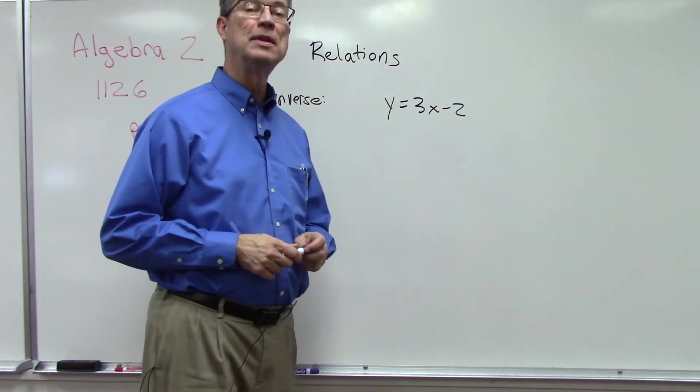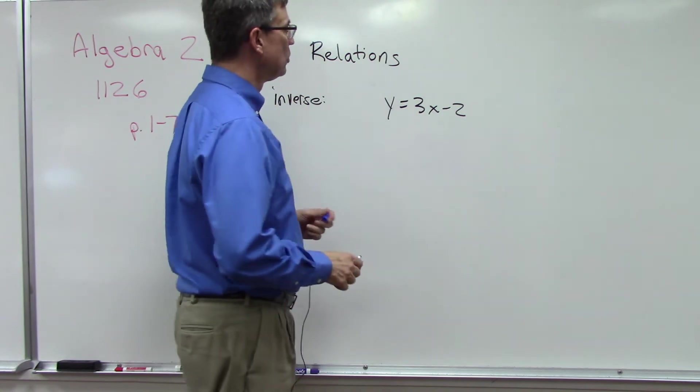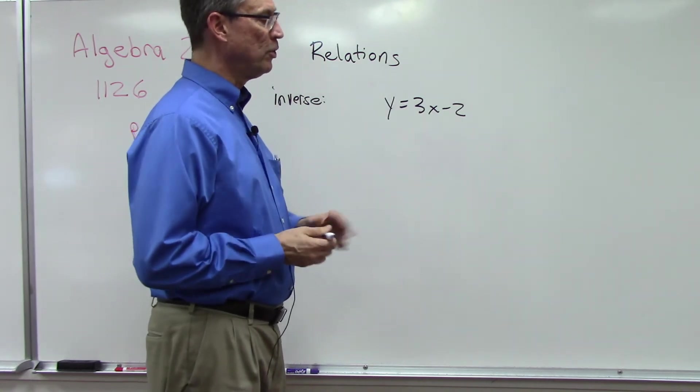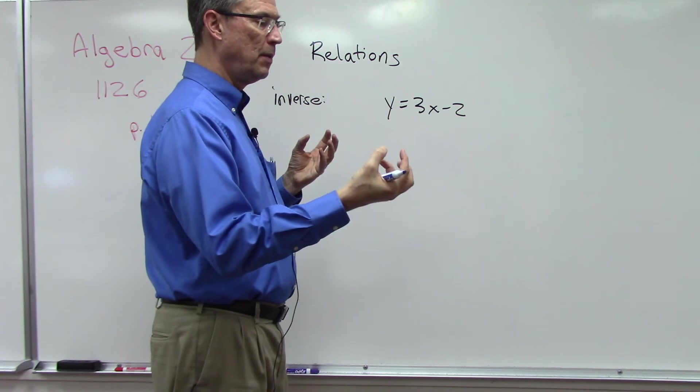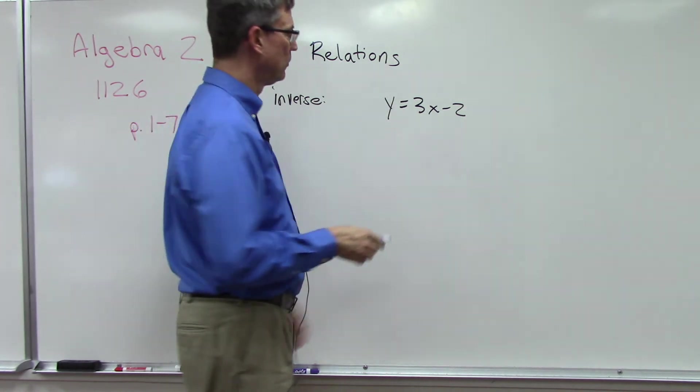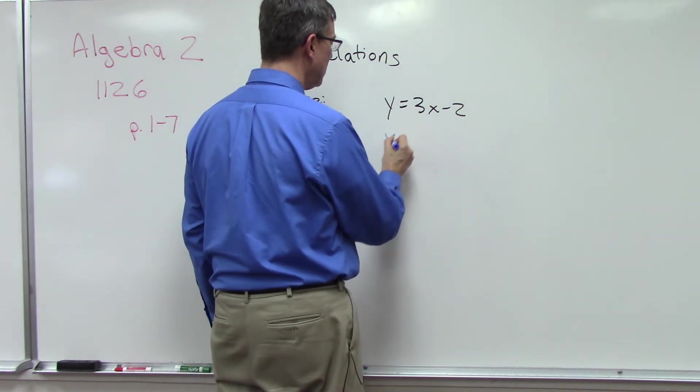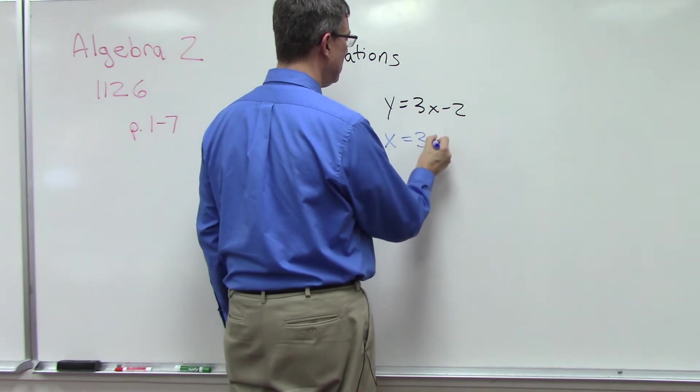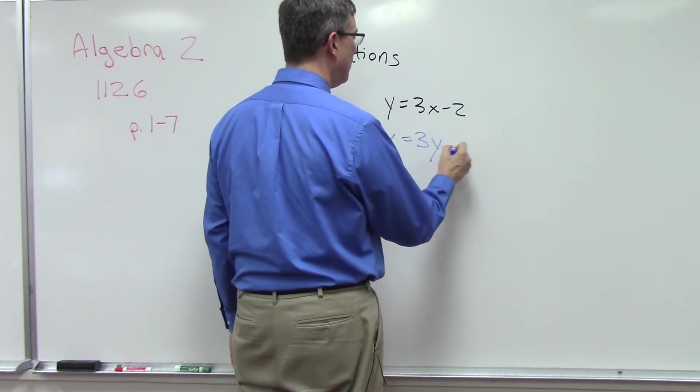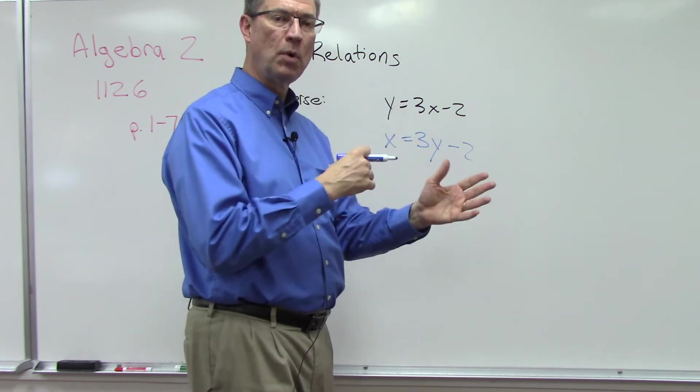Here we have y equals 3x minus 2. In the next few pages we're going to talk about graphing of lines, but for now let's talk about how we find the inverse. There's two things that we do. First of all, we take the x and the y and we just swap them. So I'm going to put x out here equals 3y minus 2.